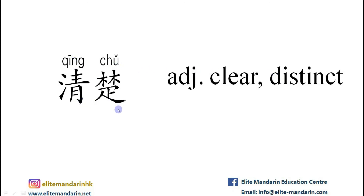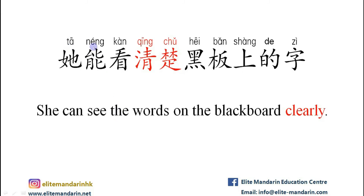清楚 — it means clear, distinct. The example: 他能看清楚黑板上的字。 He can clearly see the characters on the blackboard.